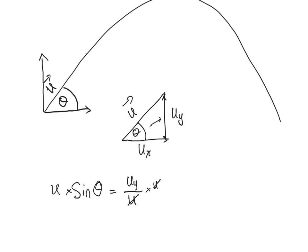We end up with uy equals u sine theta. So there's our first formula to find the vertical component of a vector.